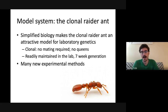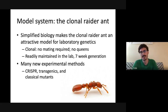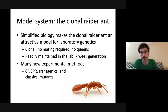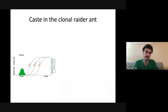Because of these advantages, many new experimental methods have been developed in this species. It was used to make the first CRISPR ants — we can use CRISPR to make targeted mutations such as gene knockouts, use transgenic vectors to insert fluorescent proteins, and also screen for classical mutants by growing up large stocks, the way William Morton Wheeler did in Drosophila.